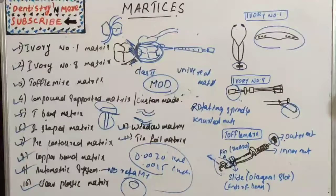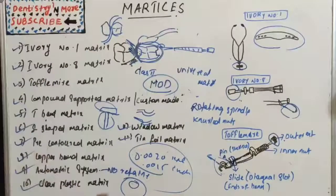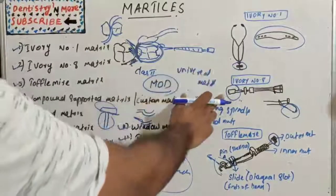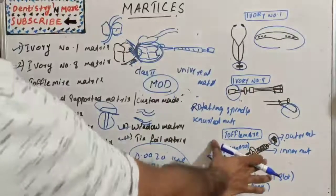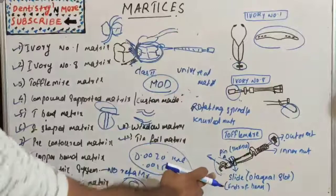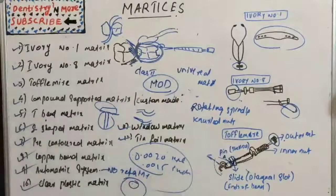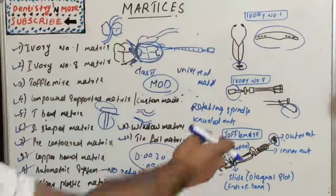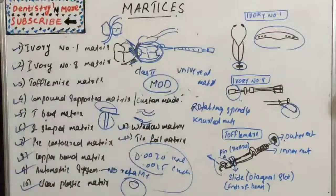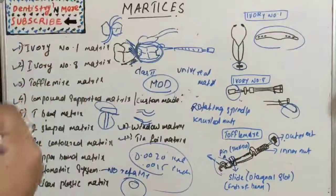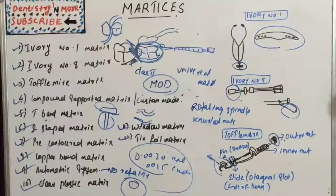That is all about matrices. The most important ones are ivory number one, ivory number eight, and Toffelmyer. Toffelmyer is a commonly asked question — always draw a proper, neat diagram with labeling and explain each part and its function, as well as how to place and remove it. Hope you understood this concept of matrices — I'll come up with a new topic in conservative dentistry. Thank you.